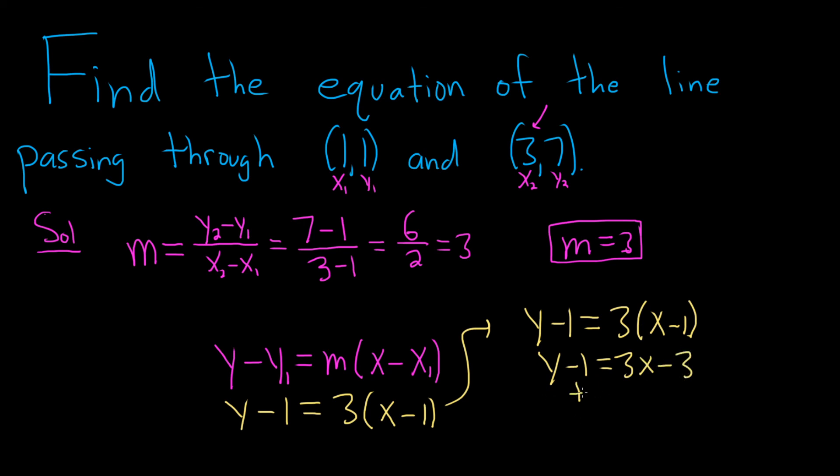The last step is to just add 1 to both sides. So plus 1 plus 1. That gives us y equals 3x minus 2. And that would be the equation of a line passing through these two points. I hope this video has been helpful.